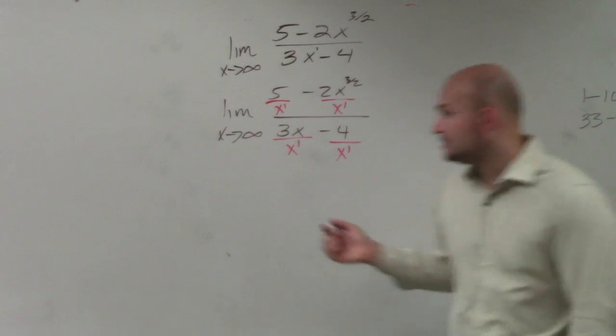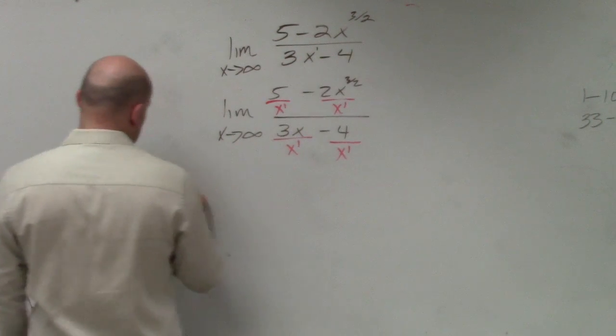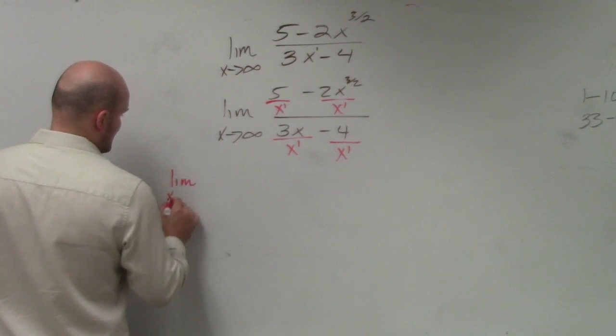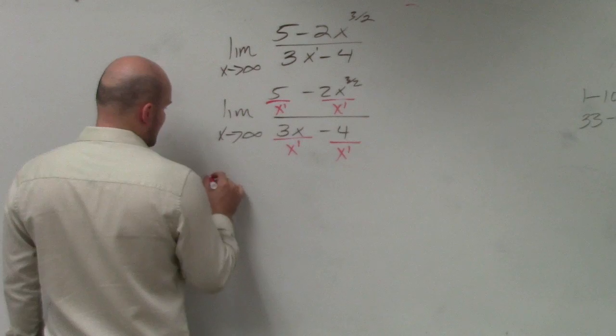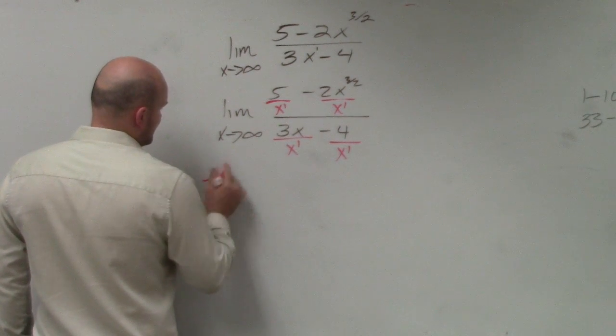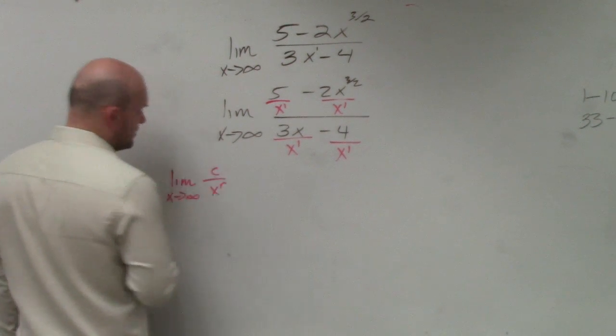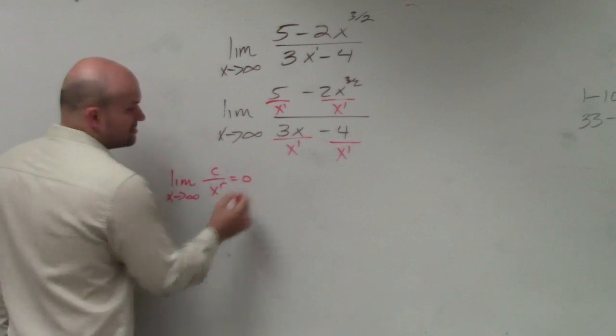Now, we just determined. Now remember, the last thing that you basically need to know is, as the limit as x approaches infinity, if you guys remember, it could be c over x to the r, right? That equals 0, correct?